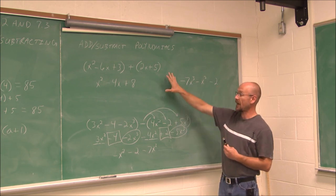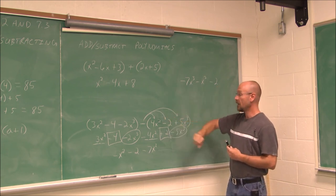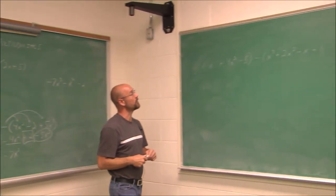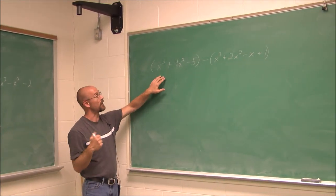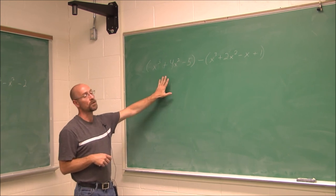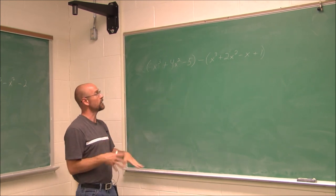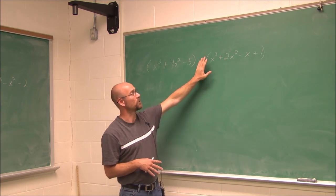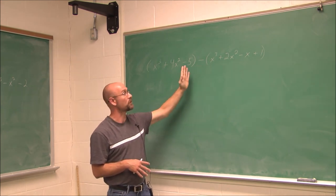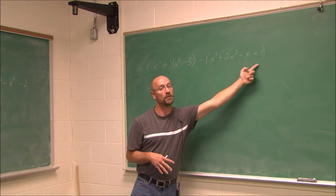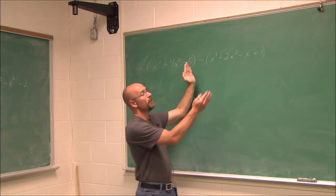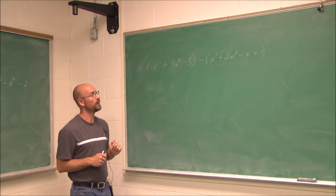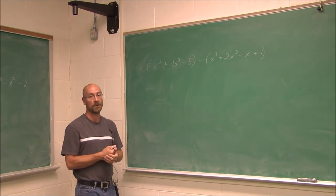That's how we add and subtract polynomials. I'll give you a similar example to try yourself. Since it's subtraction, make sure you don't lose that negative — distribute it to everything in the parentheses, because we are subtracting that entire quantity. Combine those like terms after distributing, and thank you for watching.